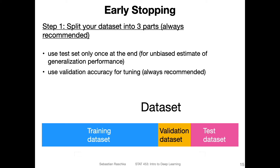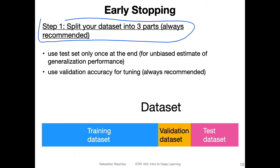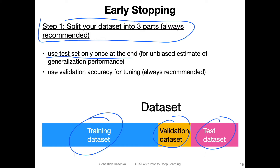As far as early stopping is concerned, there's a general strategy I always recommend when you work in deep learning. You split your dataset into three parts: a large training set, the second largest chunk should be your test set, and then a smaller validation set that you use for model tuning. The test set should ideally only be used once at the very end. Once you've found a model you're happy with by tuning it on the validation set, you use the test set to evaluate the final performance.